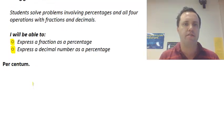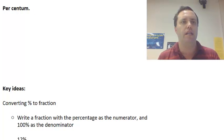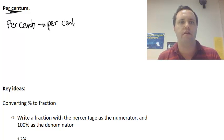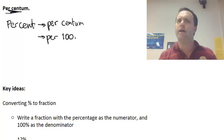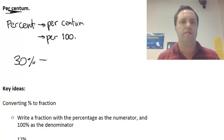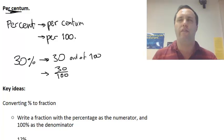Alright, so let's talk about this word percentage. It actually comes from the Latin phrase per centum, which means per 100. So a percent means a certain amount per 100. So 66% means 66 out of 100, 33% means 33 out of 100. So if we had like 30%, it's the same thing as saying 30 out of 100 or we could write it as 30 over 100.